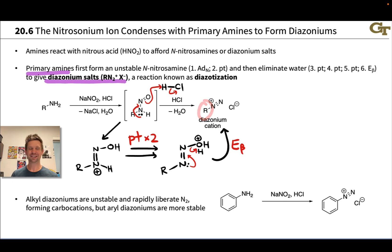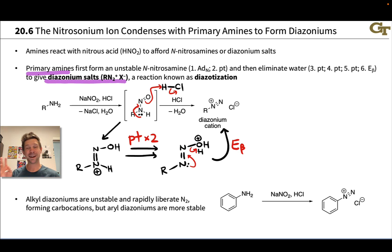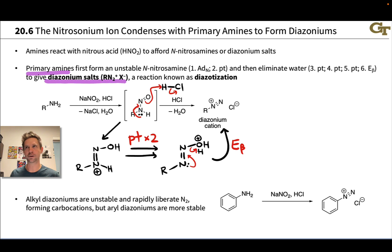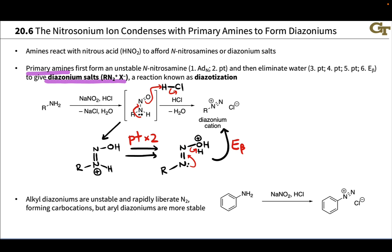When the R-group is alkyl, alkyl diazoniums are very unstable — they rapidly expel N2, and the resulting carbocations can react unpredictably. In aqueous solution, for example, we might get an alcohol. Aryl diazoniums, however, are remarkably stable — something you have to see to believe. It's an experiment commonly done in organic chemistry teaching laboratories. Aryl diazoniums can be held in water at low temperatures for a very long time. For example, starting with aniline, treating it with sodium nitrite and HCl generates the diazonium cation in situ, and it will sit in water for quite a while.